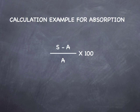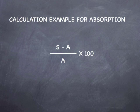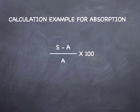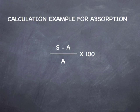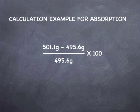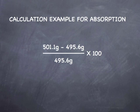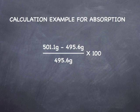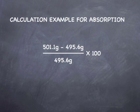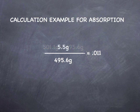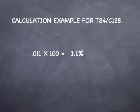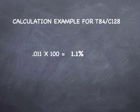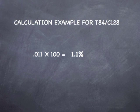Now let's go ahead and calculate our absorption. The calculation for absorption is S minus A, divided by A, times 100, where S is the weight of the SSD specimen and A is the weight of the oven dried specimen. Plugging in our numbers: 501.1 minus 495.6, divided by 495.6, times 100. This gives us 5.5 grams divided by 495.6 grams, which equals 0.011. Multiplying by 100, we wind up with an absorption for our fine aggregate of 1.1%.